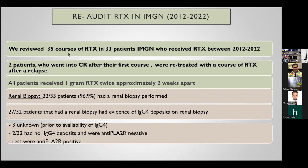In the re-audit we reviewed 35 courses in 33 patients — two patients who achieved complete remission after their first course were retreated after relapse, making it 35 courses total. All patients received one gram of rituximab twice, approximately two weeks apart. Renal biopsy was performed in 32 of the 33 patients, and 27 of these showed IgG4 deposits on the renal biopsy.